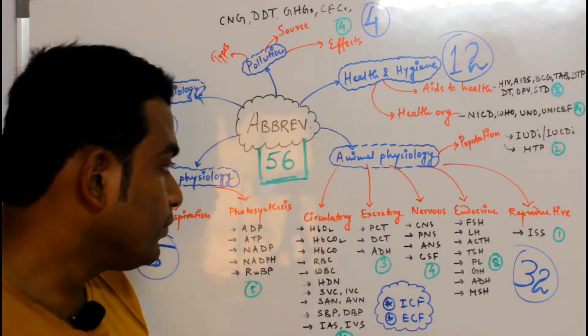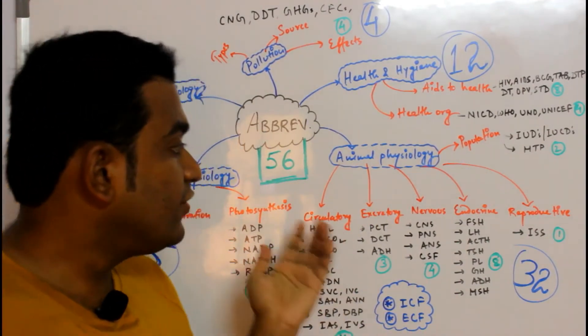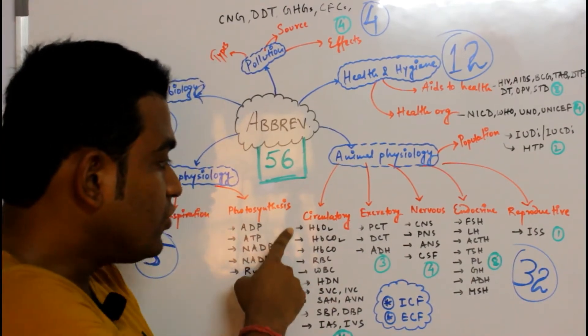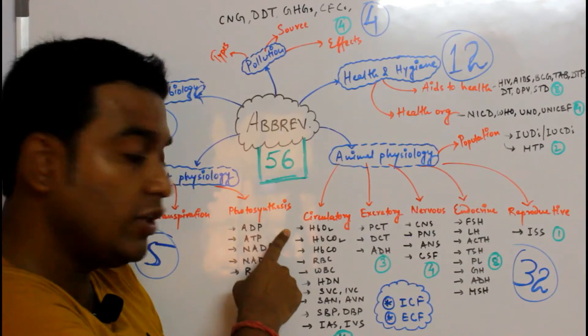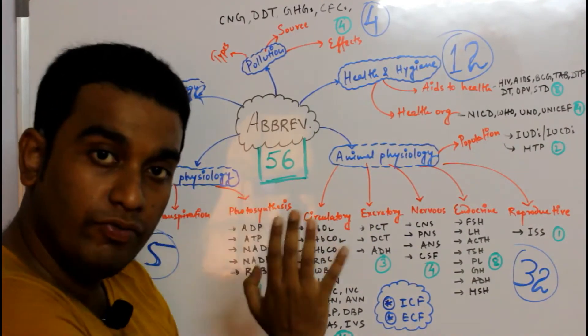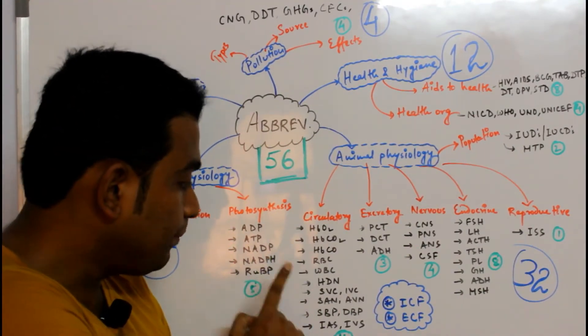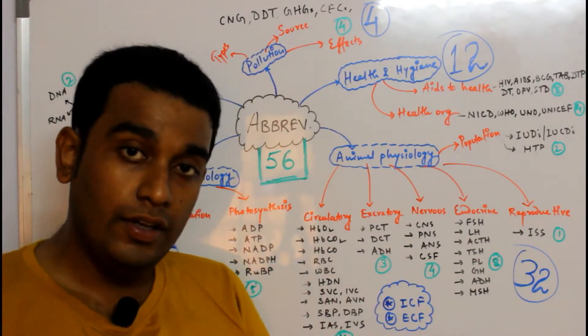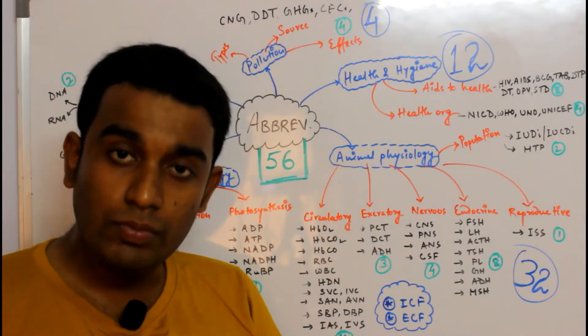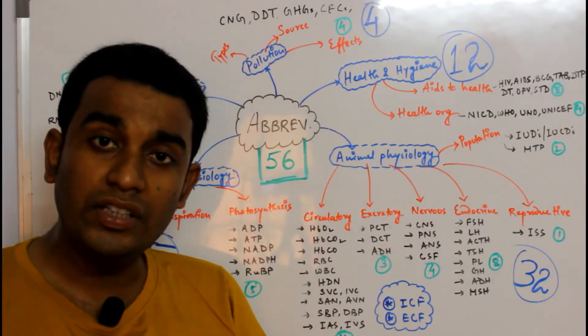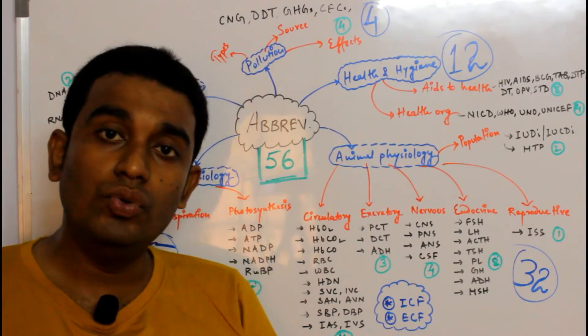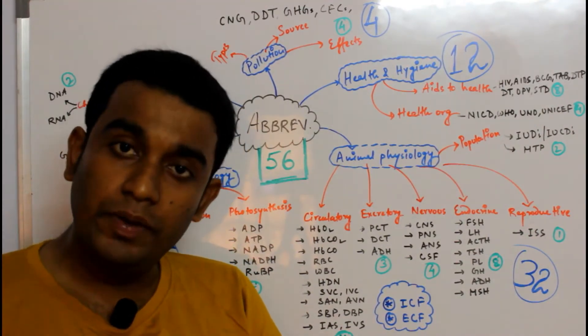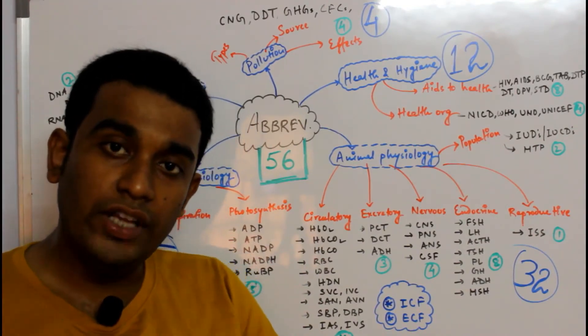In Animal Physiology, maximum abbreviations come from the circulatory system followed by the endocrine system. Starting with the circulatory system: HbO2 (Oxyhemoglobin), HbCO2 (Carbaminohemoglobin), HbCO (Carboxyhemoglobin), RBC (Red Blood Cells), WBC (White Blood Cells), and HDN (Hemolytic Disease of the Newborn), which is alternatively known as erythroblastosis fetalis related to Rh incompatibility.